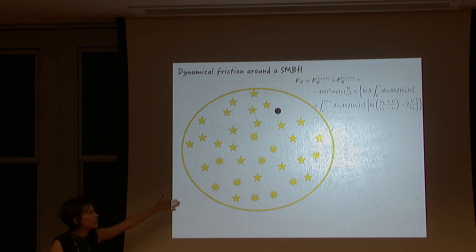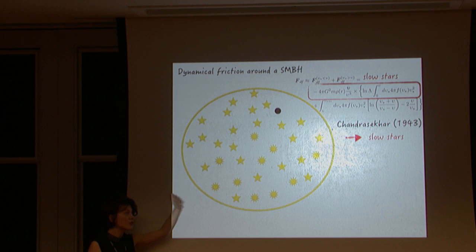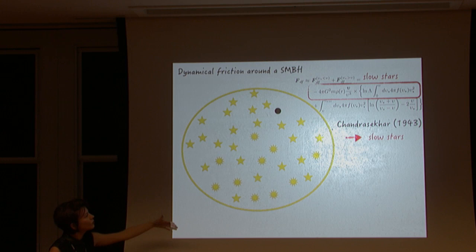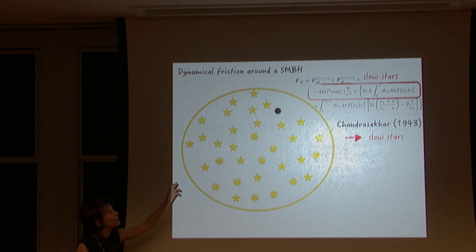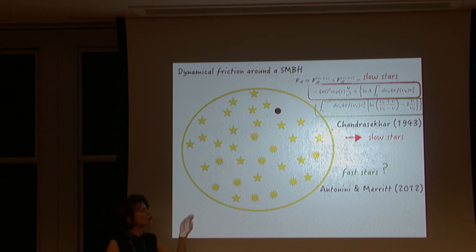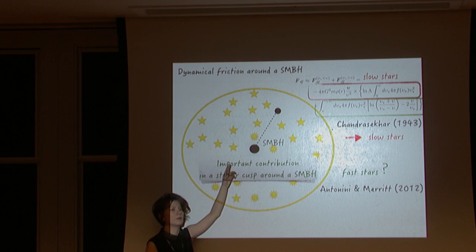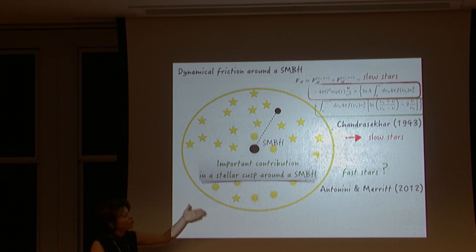Dynamical friction was described by Chandrasekhar in 1943. He found that only stars moving slower than the test body contribute to the force. However, Chandrasekhar didn't look at systems with a central supermassive black hole. What Antonini & Merritt did in 2012 is look at stellar cusps where the potential is dominated by the presence of a central body — and they showed that stars moving faster than the test body also contribute to the dynamical friction force.